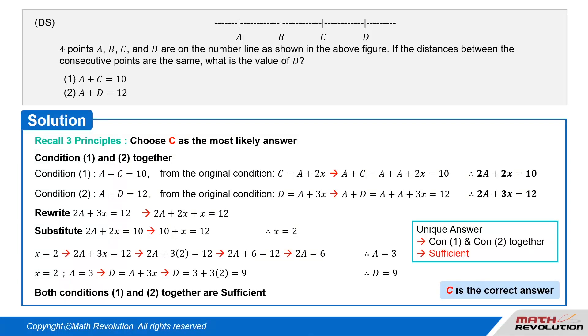This explanation is just to prove that the variable approach works. You don't have to solve like this in the actual exam. You might not have enough time, so just choose C and move on to the next question. Both conditions 1 and 2 together are sufficient. So, C is the correct answer.